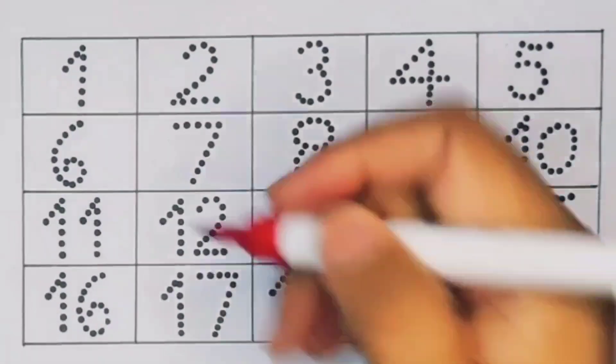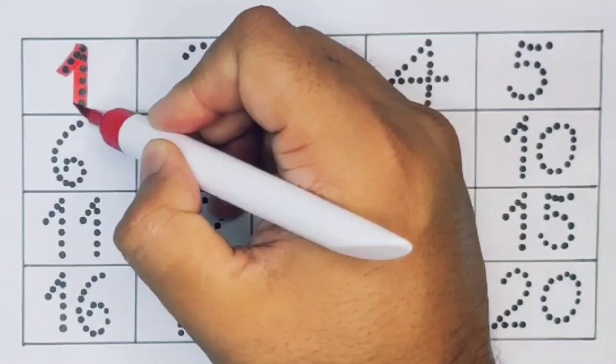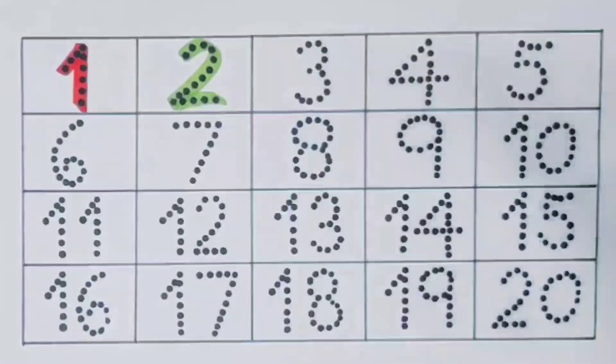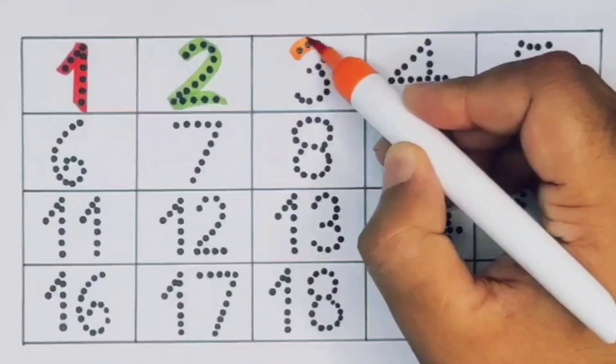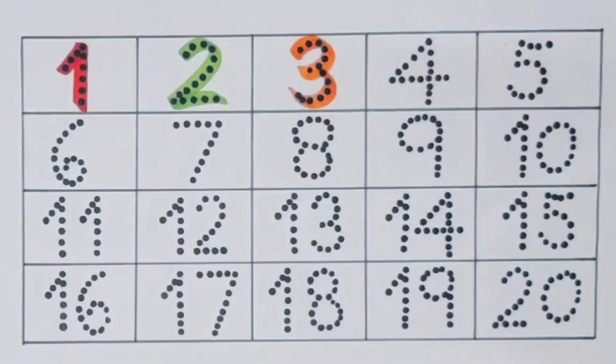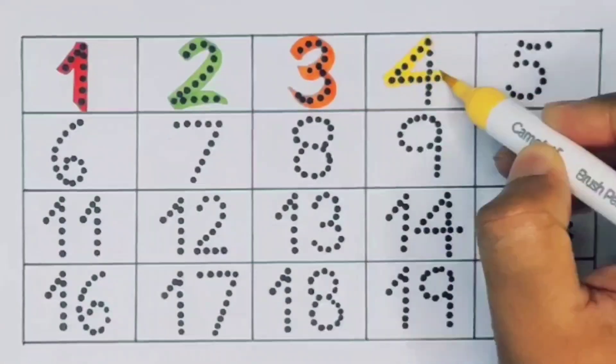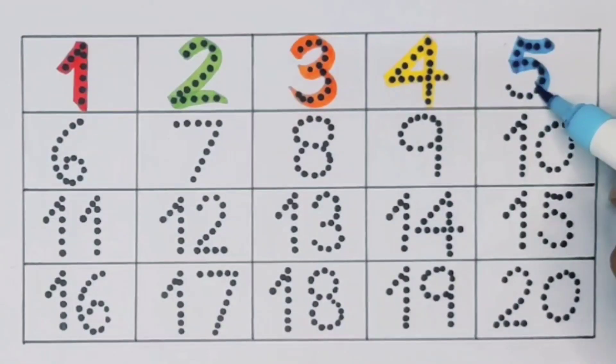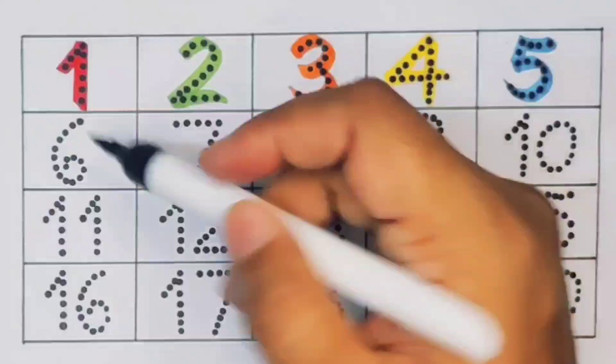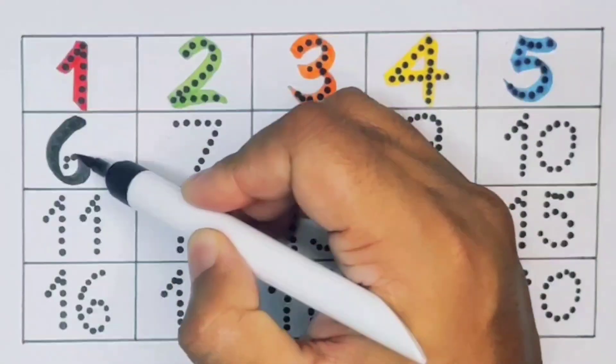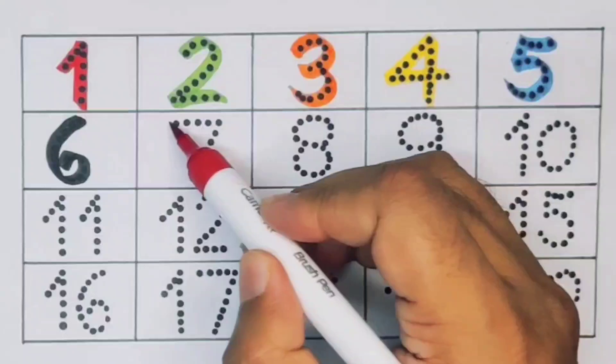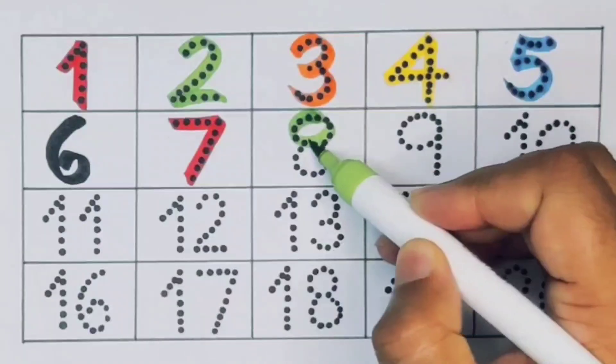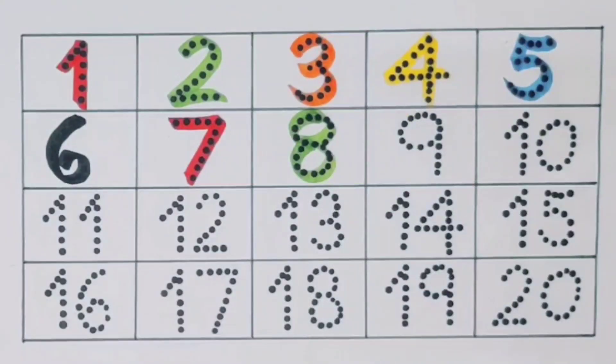First, one, number one. Next kids, two, number two. Next, three, number three. Next kids, four, number four. Next kids, five, number five. Next, six, number six.